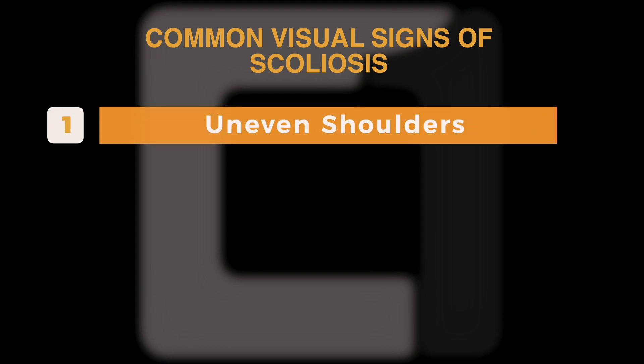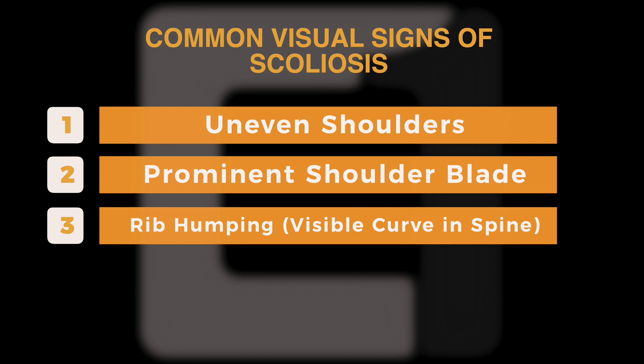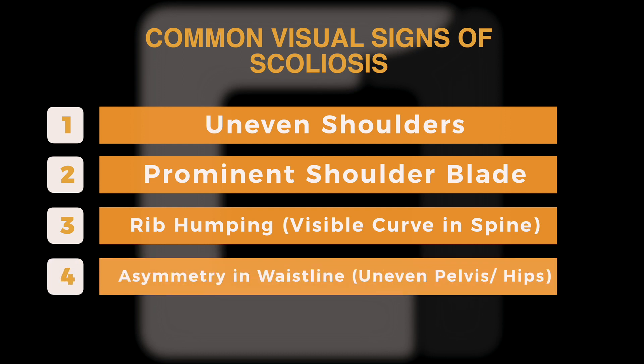What are some of the most common signs and symptoms of scoliosis? A sign is something you visually see. Common signs include: uneven shoulders; a prominent shoulder blade sticking out on one side; rib humping when bending forward, especially in the thoracic spine; asymmetrical waist, where a left scoliosis shows flattening on the left and increased curve on the right; and uneven pelvis or hips where one leg appears shorter.